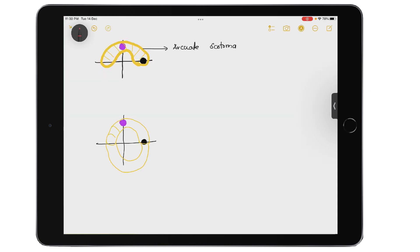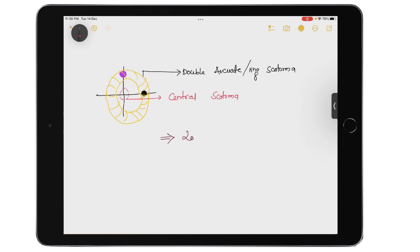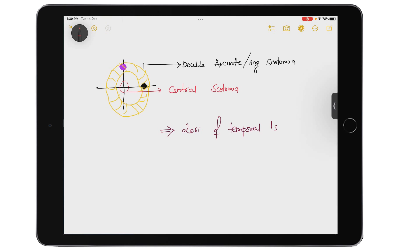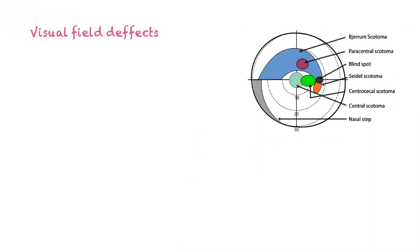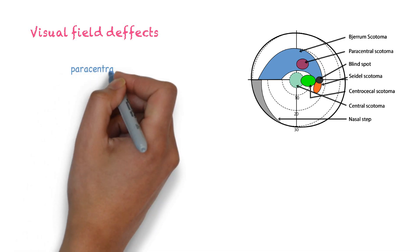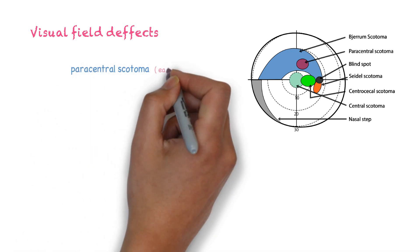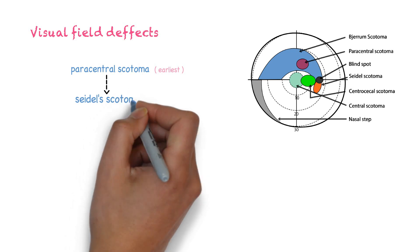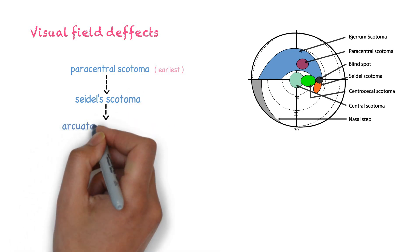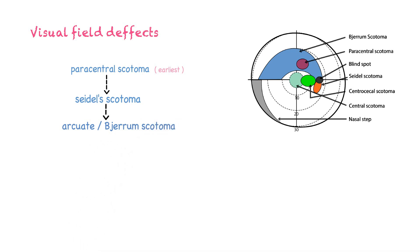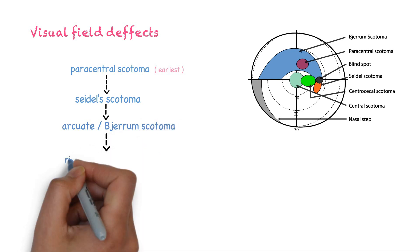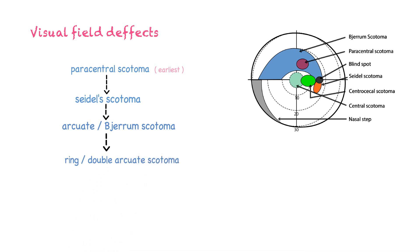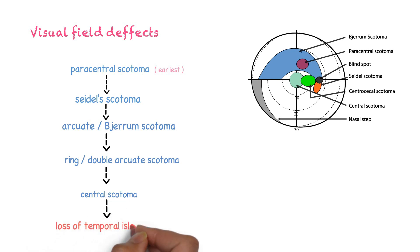Then there may be a ring or double arcuate scotoma, in which two arcuate scotomas join together. There may also be central scotoma, and finally, there is loss of the temporal island of vision. To summarize the progression: paracentral scotoma → sickle scotoma → arcuate/Bjerrum scotoma → double arcuate/ring scotoma → central scotoma → loss of temporal island.